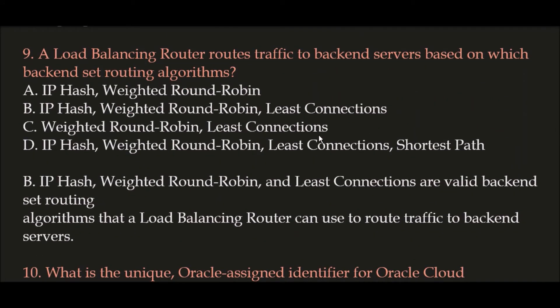Question 9: A load balancing router routes traffic to back-end servers based on which back-end set routing algorithms? The correct answer is Option B: IP Hash, Weighted Round Robin, and Least Connections algorithms. A load balancing router routes traffic to back-end servers based on the IP Hash algorithm, Weighted Round Robin algorithm, and Least Connections algorithm, as these are all valid back-end set routing algorithms.